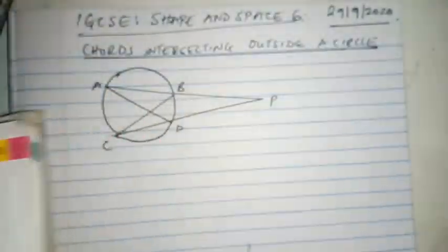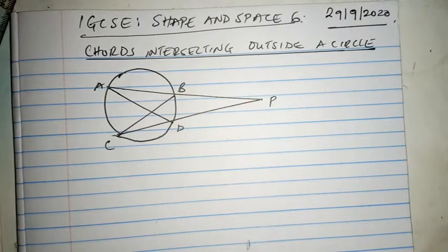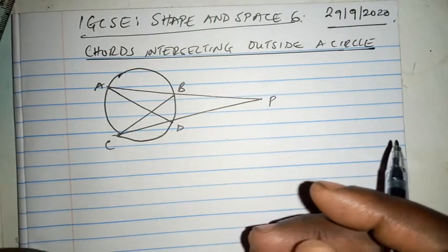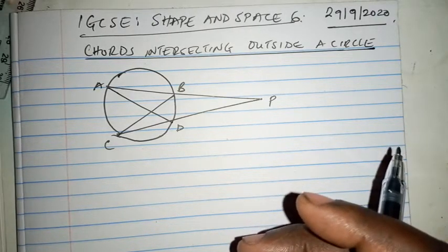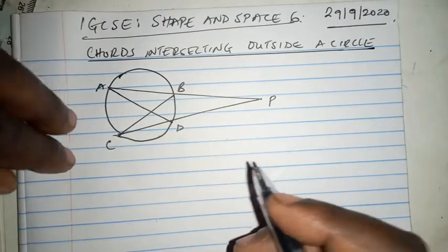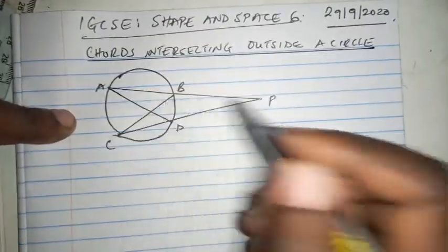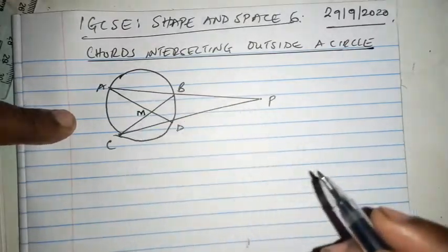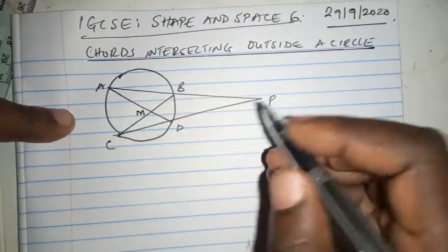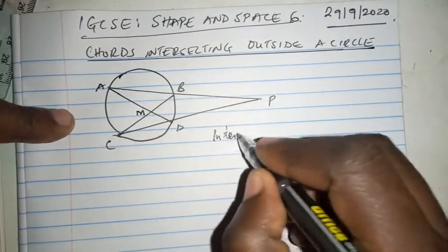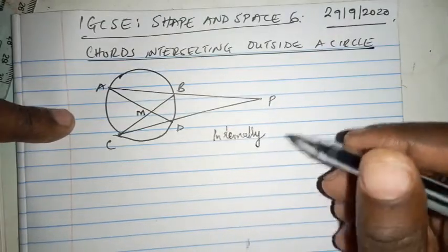Book two, and we want to discuss chords that intersect externally or chords that intersect outside a circle. I want to use this video as a summary of intersecting chords. First, let us summarize internally intersecting chords.